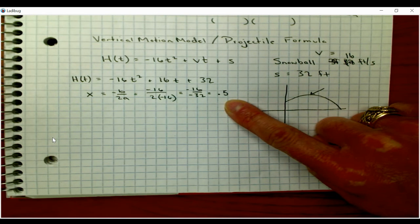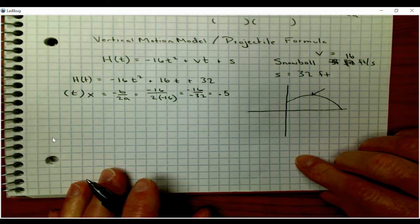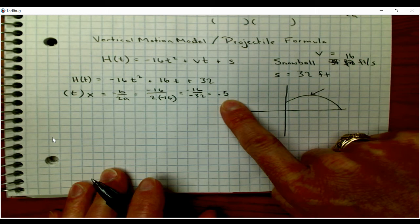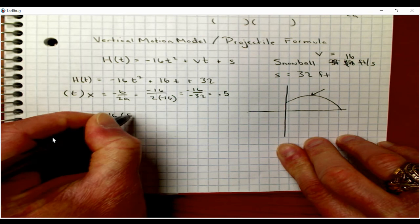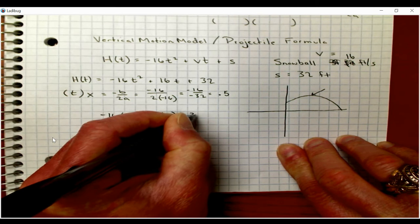That makes sense. This is x, but really it's the same as t because this is all about time. So this snowball reaches its maximum height at half a second. Now to find out what that height is, we have to take this time and plug it into our model. So I'm going to plug in negative 16 times 0.5 squared plus 16 times 0.5 plus our initial height of 32.